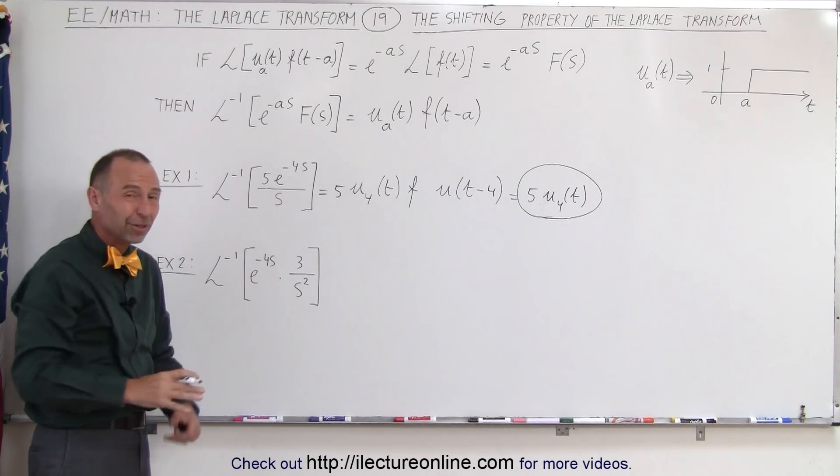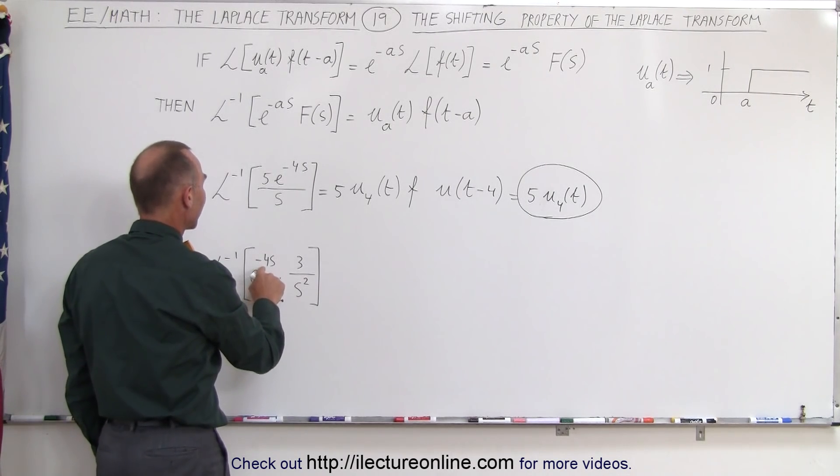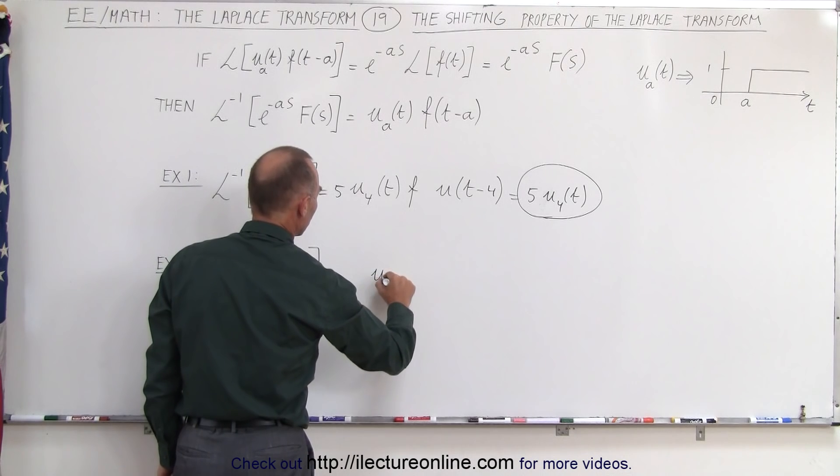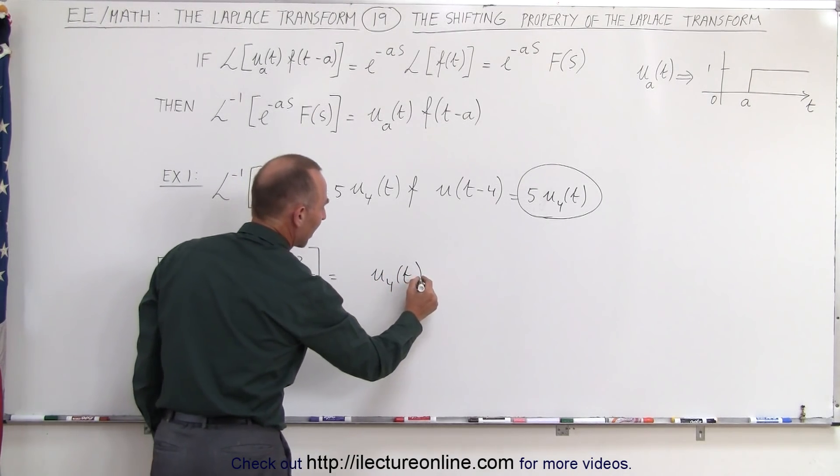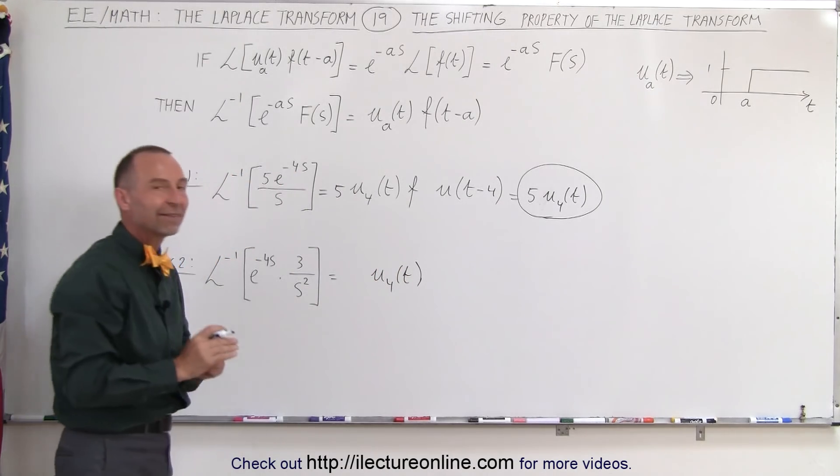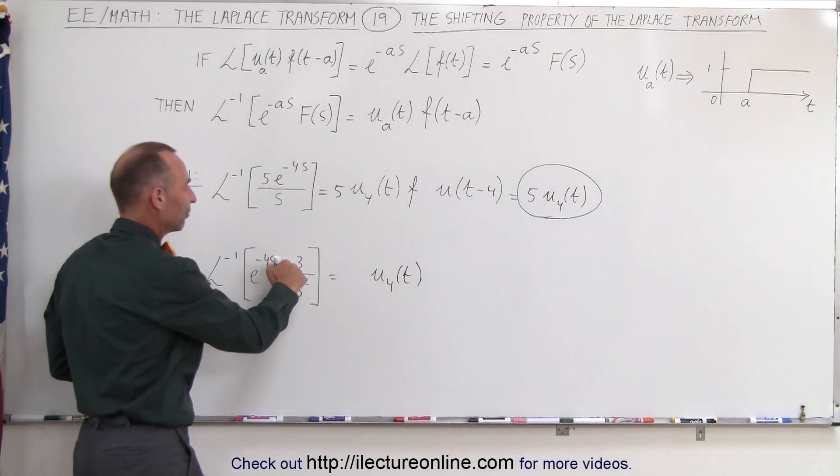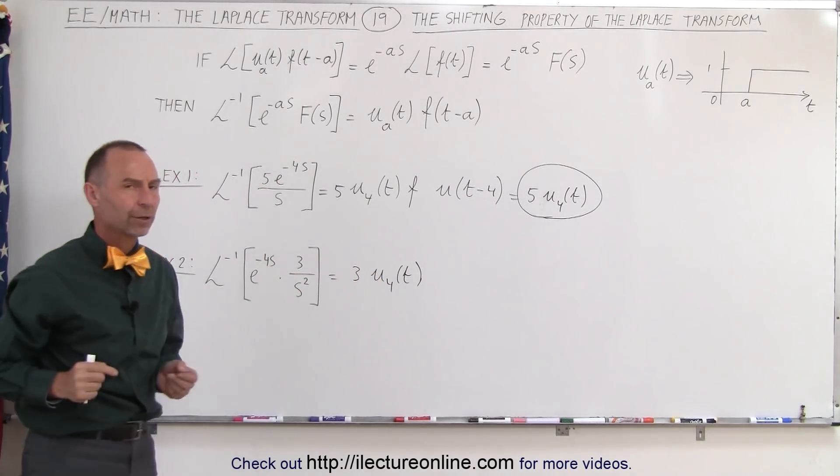Here's another example to try and hopefully clarify it some more. Again, when we have e to the minus 4s, that's going to give us u sub 4 of t because we're going to shift it by the step function, which means that nothing is valid until 4 seconds have elapsed. We still have the number 3 here we can factor out, but now we have 1 over s squared.